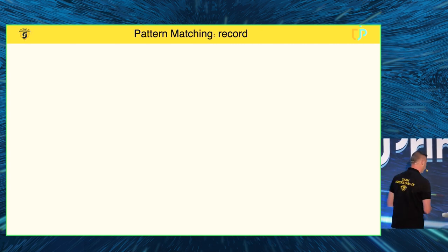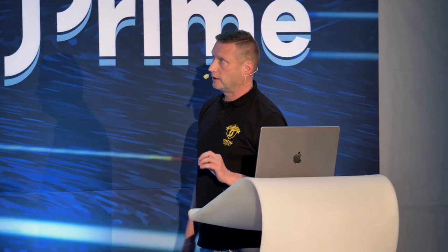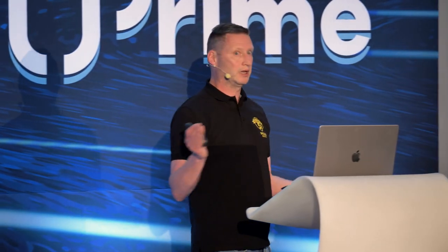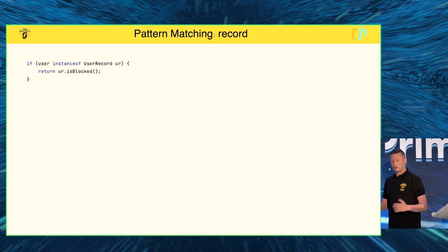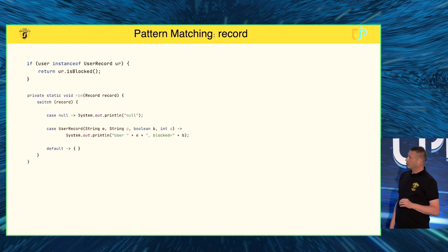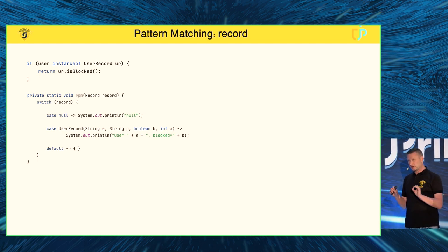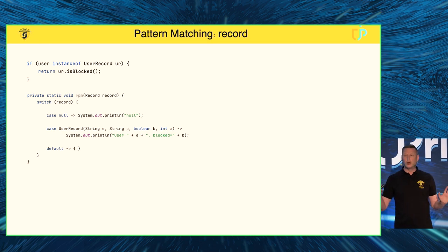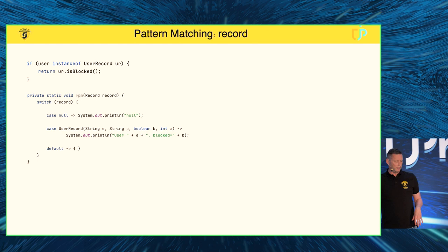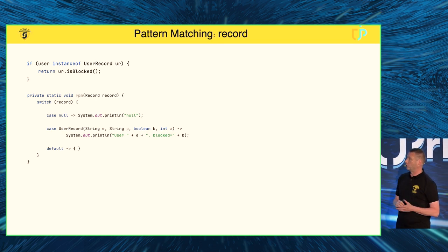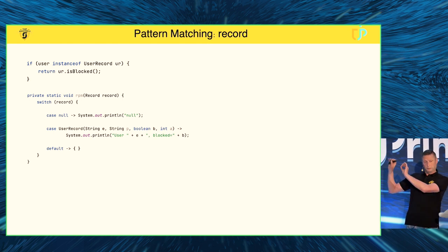Java didn't stop there — they added record pattern matching. The simple part: if user is an instanceof a UserRecord, we name it 'ur' and can call methods on it right away. The more interesting part: you can destructure a record in a switch statement. You can also now handle null as a valid case value — previously you always had to null-check before using switch, or you'd get a NullPointerException. The language designers fixed that by allowing null as a valid switch case.